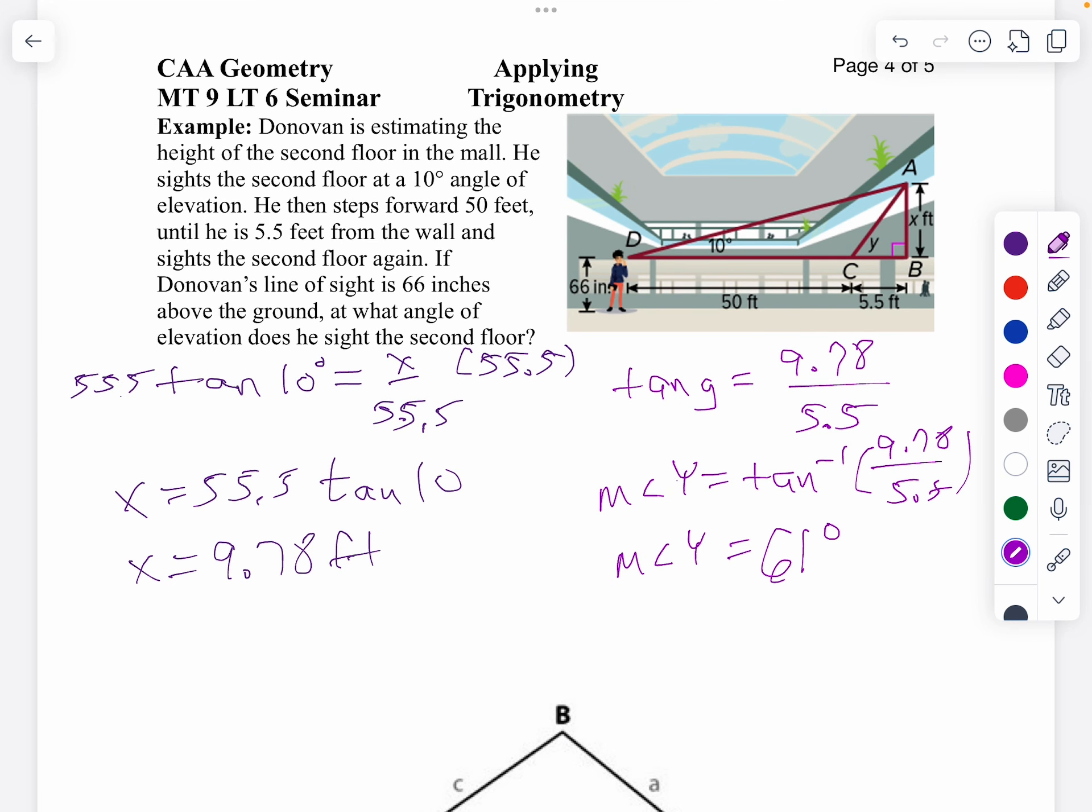So he goes from looking up at 10 degrees to looking up at 61 degrees. Does that make sense? Well, yeah, as you walk towards something you have to tilt your head higher and higher to keep your object in sight. So yes, 61 degrees is reasonable for this question.